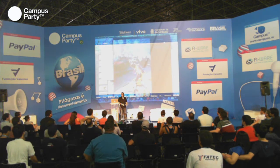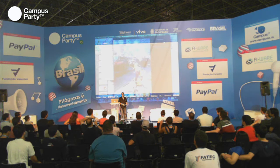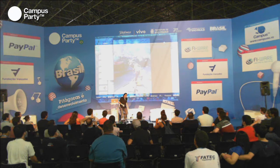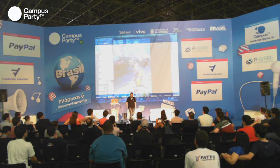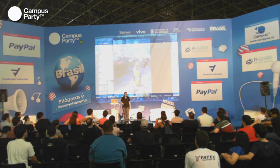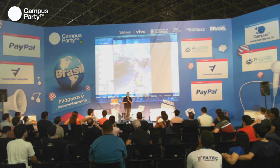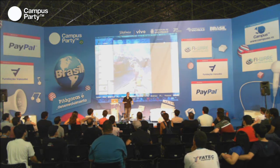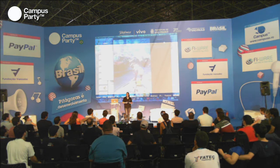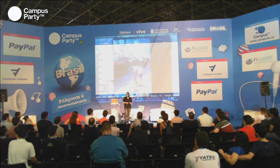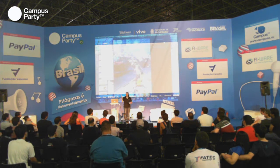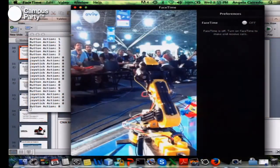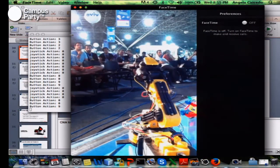We're actually controlling it. There's a light coming on — you can turn it on and off. We're reading from one of the USB ports, collecting the data, and passing it through to the robot arm. And then you can grab things, open the arm, and have a lot of fun trying to grab something.